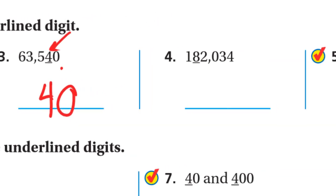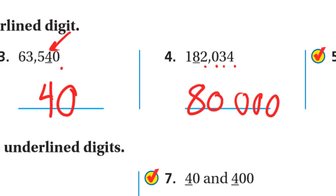The next one: the 8. Write the 8 and make all digits to the right zeros — four zeros — giving 80,000. Or: the 8 is at the ten-thousands place, so it's eight ten-thousands, or 80,000.